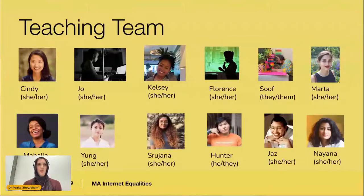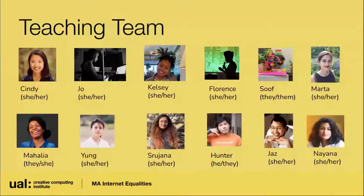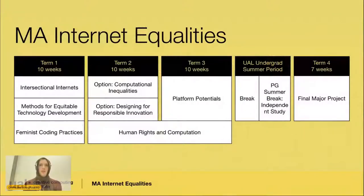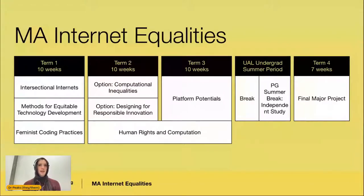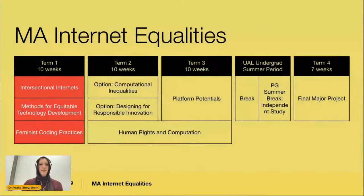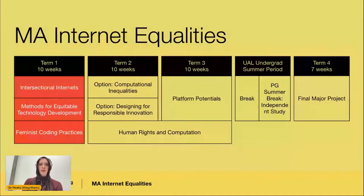The MA Internet Equalities program is 18 months long and composed of four terms. The first term has three units, the second term has two, the third is also two, and the final term is independent research on a final major project. In the first term, which is 10 weeks long, the three units are: Intersectional Internets, Methods for Equitable Technology Development, and Feminist Coding Practices.